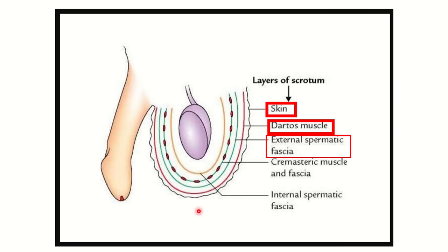In this picture we can see the different layers of the scrotum and finally the testes located within the scrotum. First of all, on the outside we have the skin. Then the dartos muscle — this reddish structure is the dartos muscle. Just inside the dartos muscle there is the external spermatic fascia — this green layer is the external spermatic fascia.